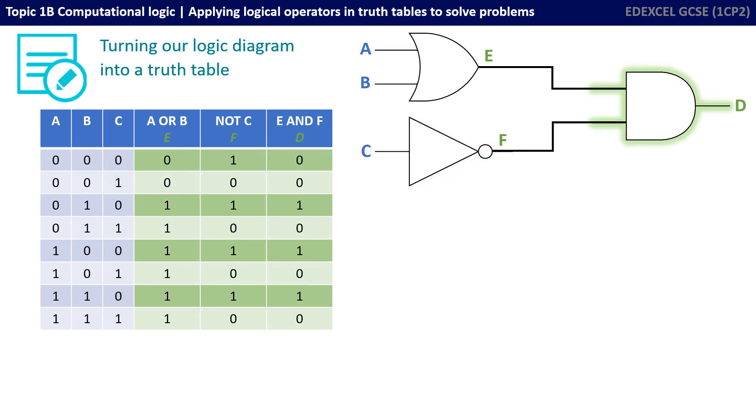We now take the final AND gate, and that takes the inputs from column E and F. And remember, with an AND gate, both inputs E and F have to be 1 for the output D to be 1. And you can see I've filled that out there.